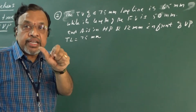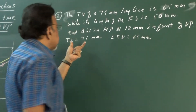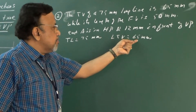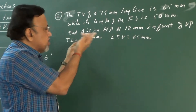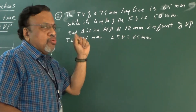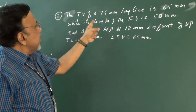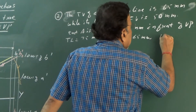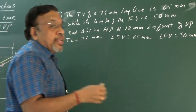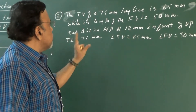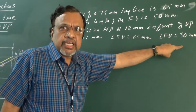I have given directly LTV — length of the top view — as 65. Since I have given the true length as 75 and LTV as 65, the line has to incline to HP. Otherwise, the LTV should have been equal to the true length itself. If LTV equals 75, that means the line is parallel to HP. While the length of the front view is 50 mm — LFV is 50 — since LFV is 50 mm, that means the line is inclined to VP also. So the line is inclined to both HP as well as VP, and I have given directly LTV as well as LFV.